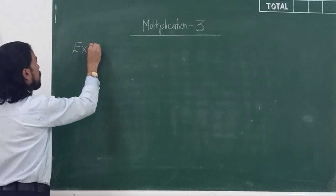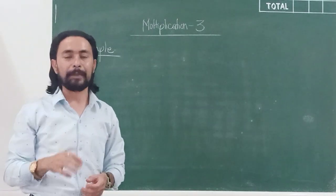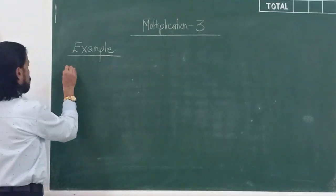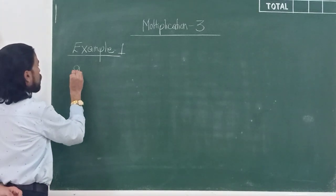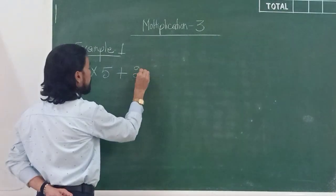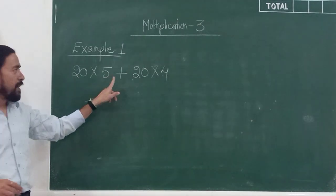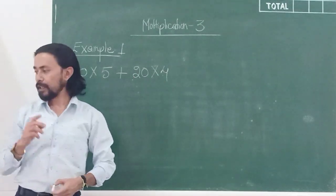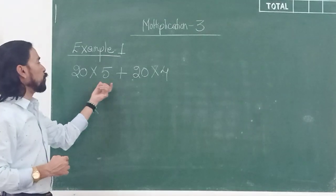Let's take an example pertaining to sum number 5, where a set of numbers is multiplied by a common number. This is example number 1: suppose I am multiplying 20 by 5 and adding it to 20 multiplied by 4. Looking at question number 5 in your notebook, part A says 497 multiplied by 37 added to 497 multiplied by 13 — so there is a common number being multiplied by two different numbers.